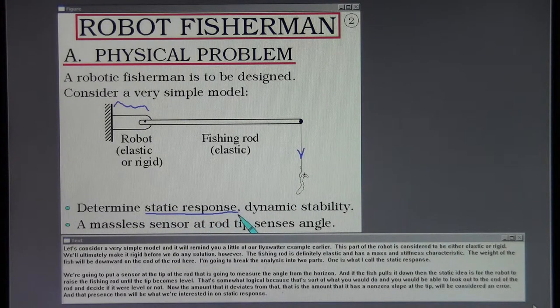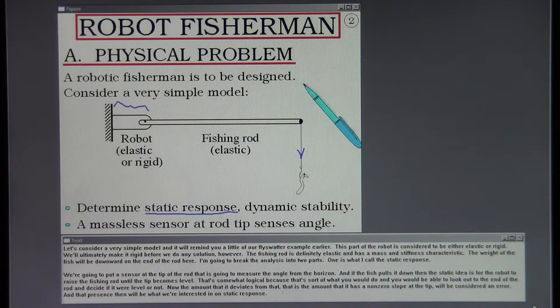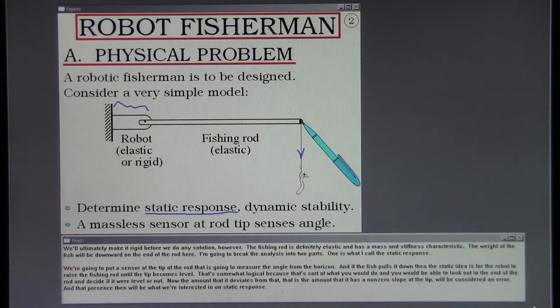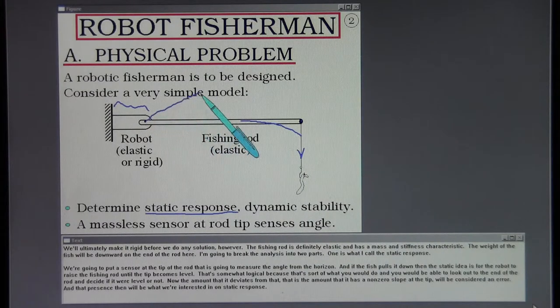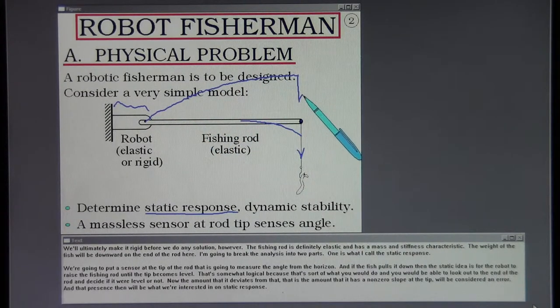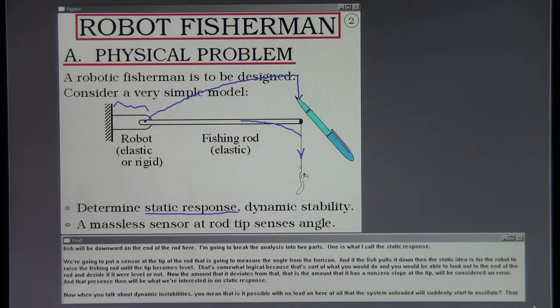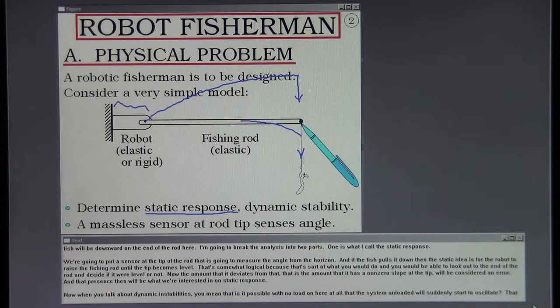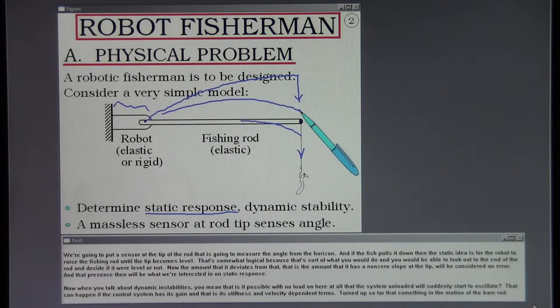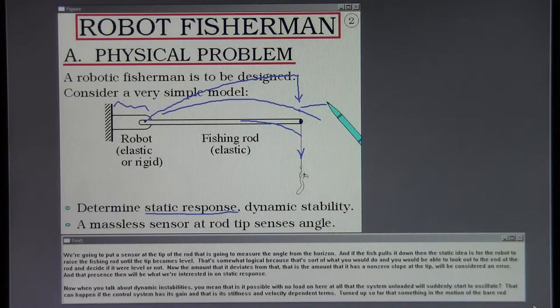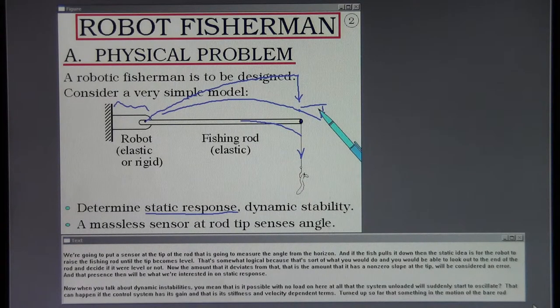I'm going to break the analysis into two parts. One is what I call the static response. We're going to put a sensor at the tip of the rod that is going to measure the angle from the horizon. And if the fish pulls it down, then the static idea is for the robot to raise the fishing rod until the tip becomes level. That's somewhat logical because that's sort of what you would do and you would be able to look out to the end of the rod and decide if it were level or not. Now the amount that it deviates from that, that is the amount that it has a non-zero slope at the tip, will be considered an error. And that presence then will be what we're interested in on static response.